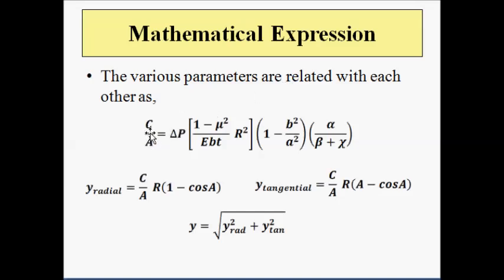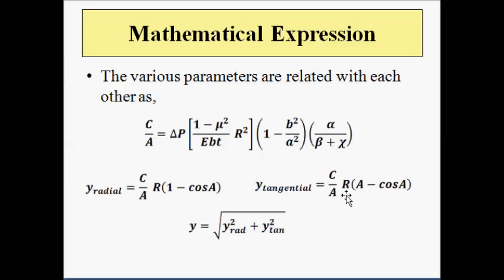The mathematical expression relating pressure difference and coiling angles is: C/A = ΔP × (1 − μ²) / (E × b × t × r²) × (1 − b²/a²) × (α/β). The radial displacement of the tube is given by (C/A) × r × (1 − cos A), and the tangential displacement Y-tangential is given by (C/A) × r × (A − cos A). The total displacement is the square root of the sum of the squares of radial and tangential displacements.